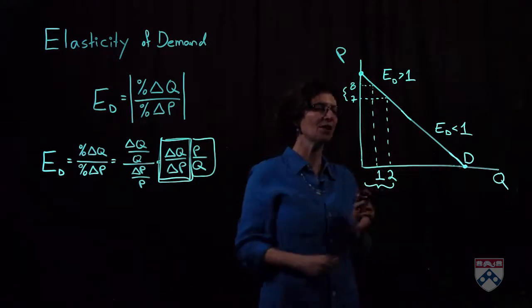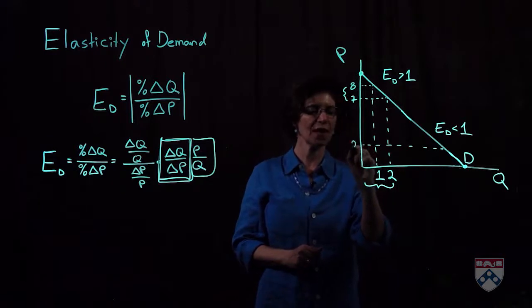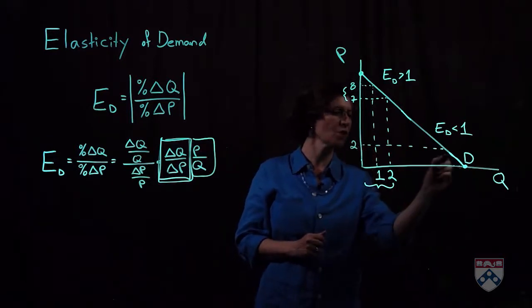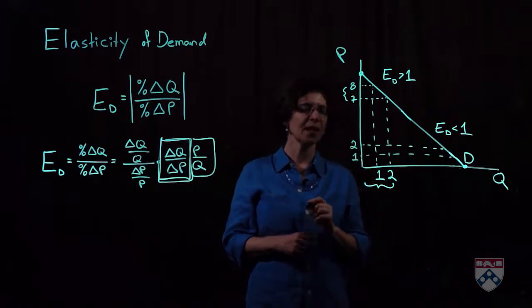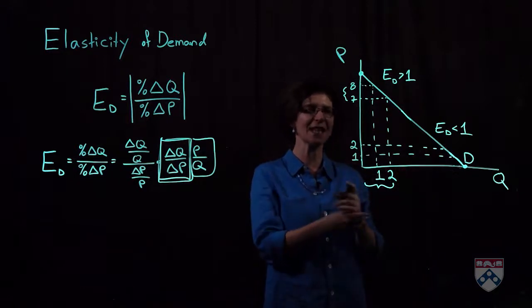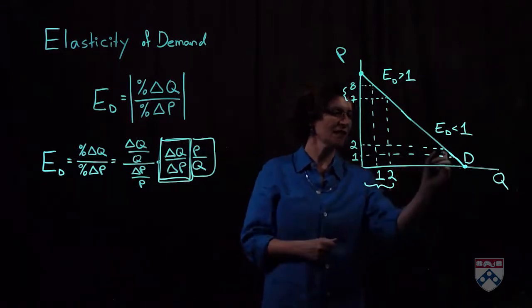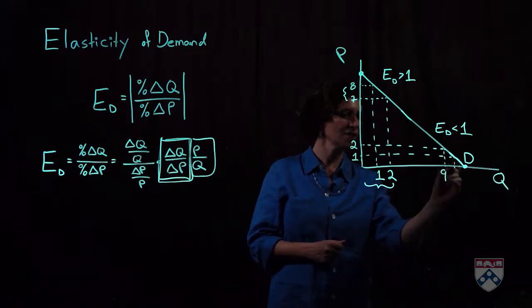If we go to the bottom of the demand curve and we do this again, we can think about what happens when the price drops from $2 to $1. In terms of the change in quantity, in terms of the slope, we should have the same effect. So for example, quantity demanded might increase from 9 to 10.